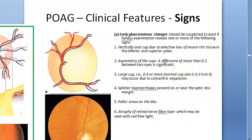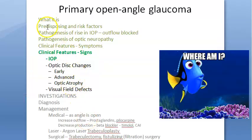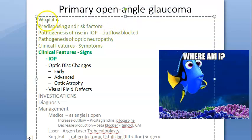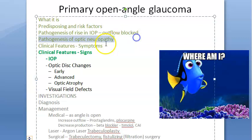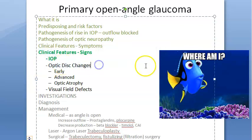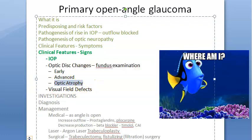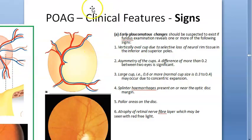We have been covering primary open-angle glaucoma. We looked at what it is, predisposing and risk factors, pathogenesis of rising intraocular pressure, pathogenesis of optic neuropathy, symptoms, signs, and diurnal variation of intraocular pressure. Now we are at optic disc changes — what you will actually find on fundus examination. We will detect early glaucomatous changes, advanced glaucomatous changes, and glaucomatous optic atrophy.